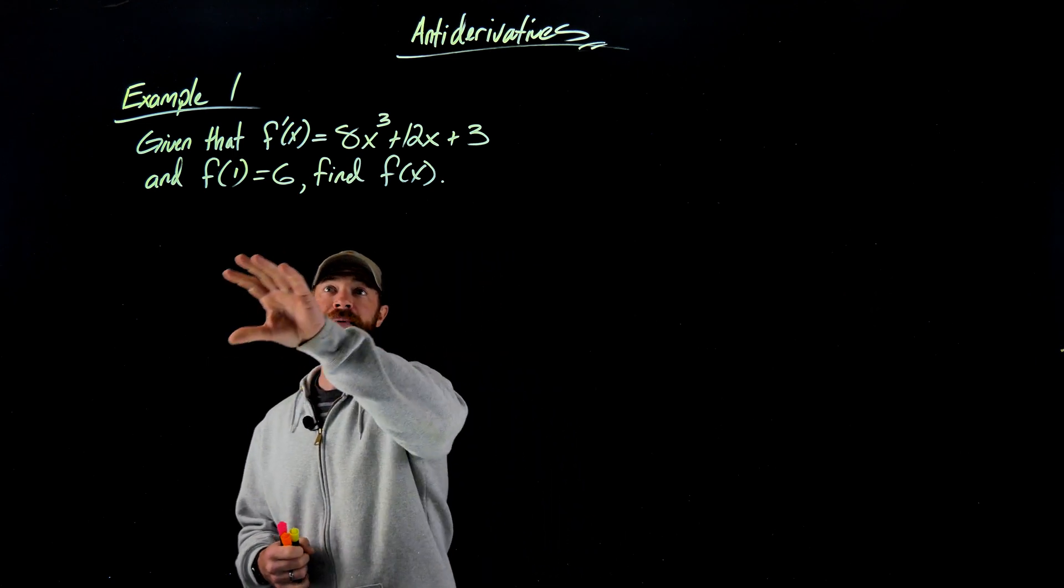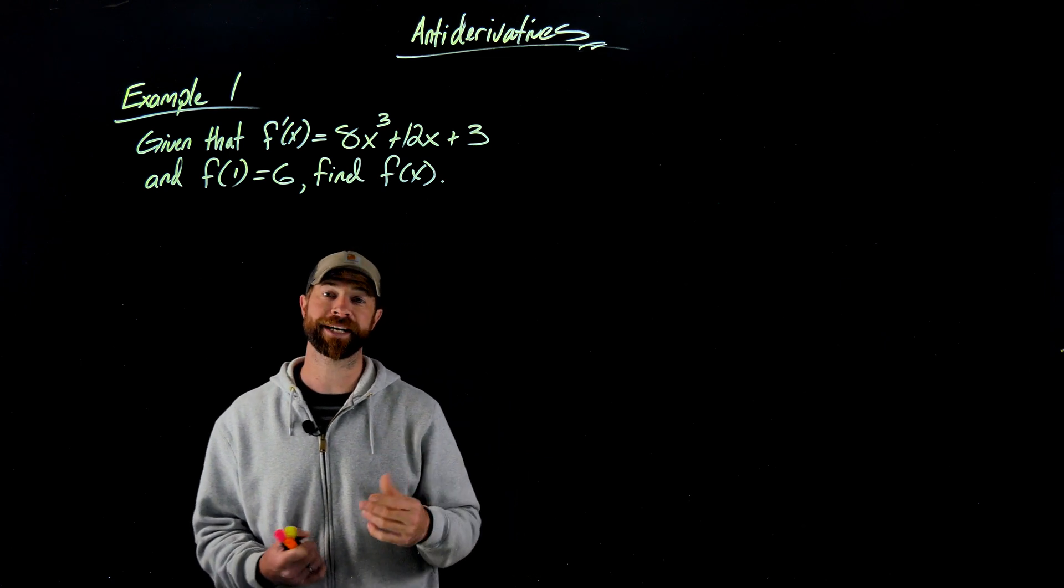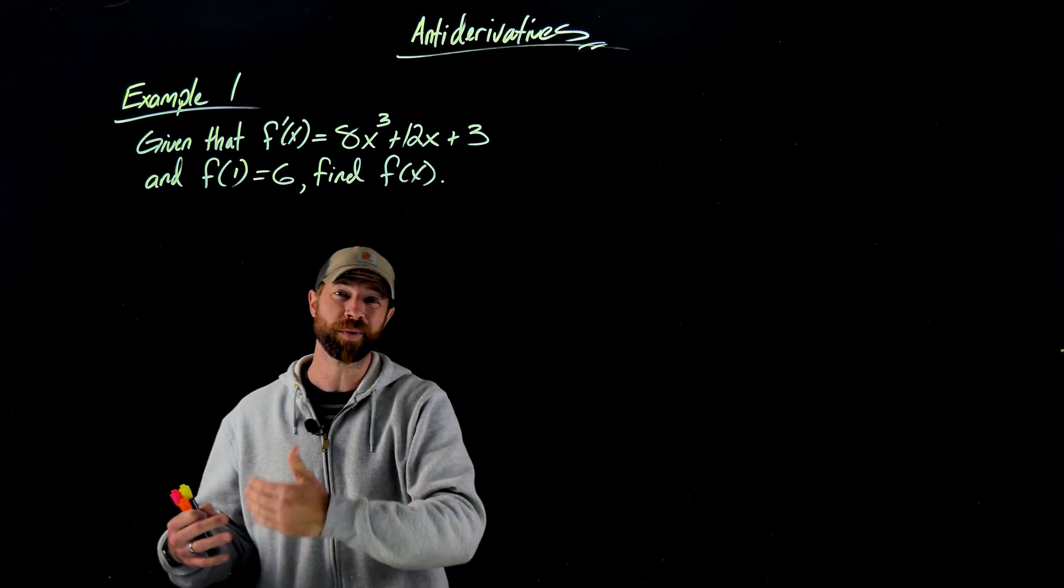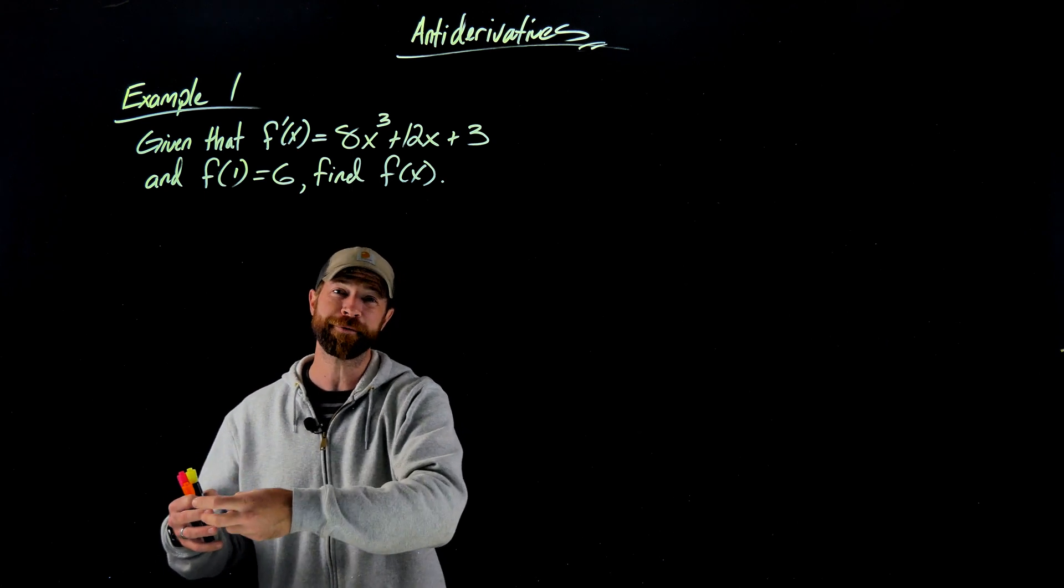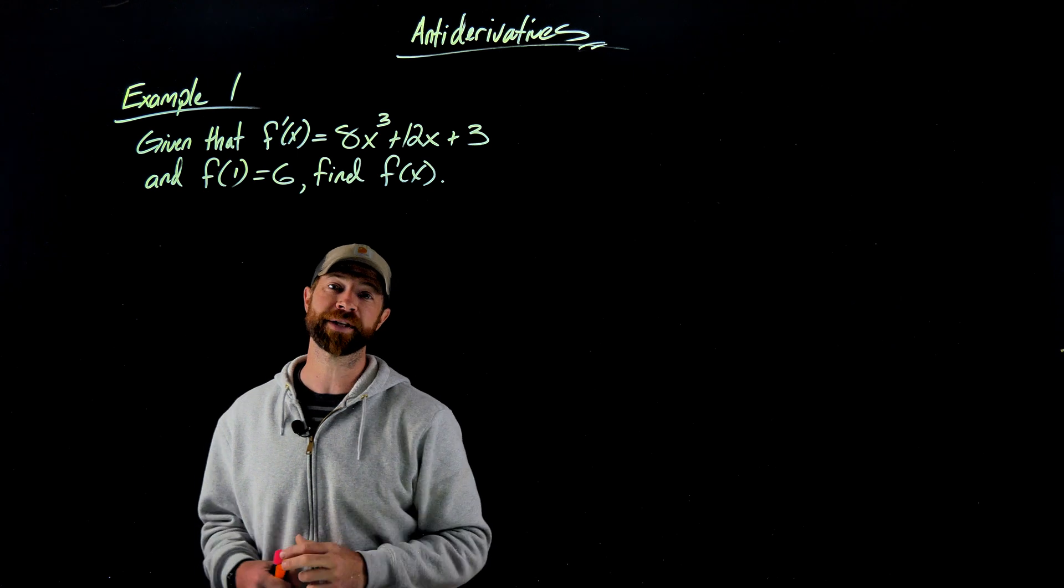In this first example here, we're being told that the derivative function is 8x cubed plus 12x plus 3. We're also told, and this is the initial condition, that the original function when we plug in a 1 for x, we're going to get out a 6. We're being asked to find the original function.